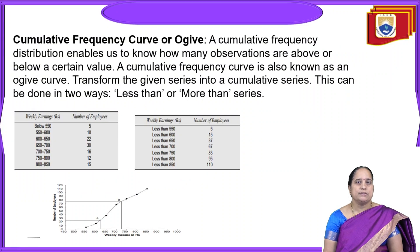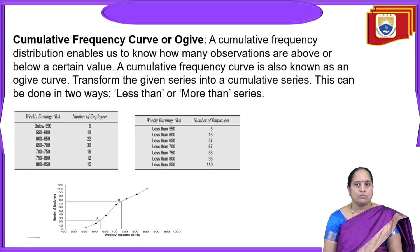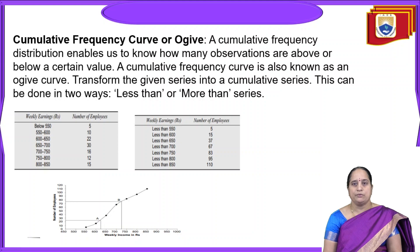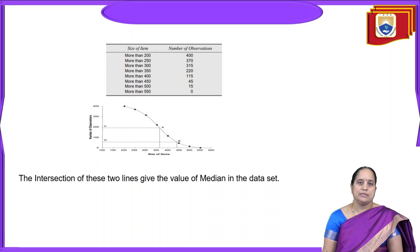The next type is the cumulative frequency curve, also known as the ogive curve. A cumulative frequency distribution enables us to know how many observations are above or below a certain value. A cumulative frequency curve transforms the given series into a cumulative series, and this can be done in two ways — less than series or more than series. Especially when computing the median, we can find these two types of curves. The intersection of the less than curve and the more than curve gives the median value.